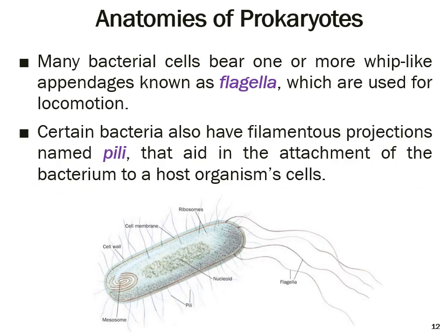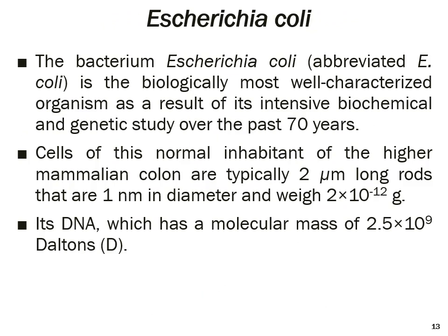Many bacterial cells possess whip-like appendages known as flagella, used for movement. They also have small filamentous projections called pili, which are used for attachment — a particular organism attaches to a bacterial cell using these pili. E. coli is a well-known example of a prokaryotic cell and is the biologically most well-characterized organism as a result of intensive biochemical and genetic study over the past 70 years.